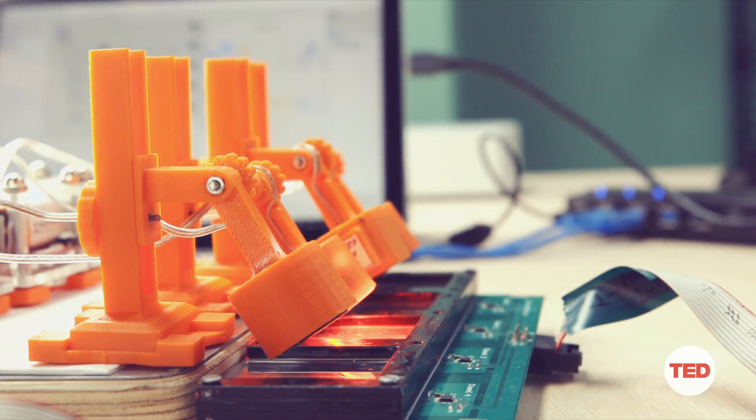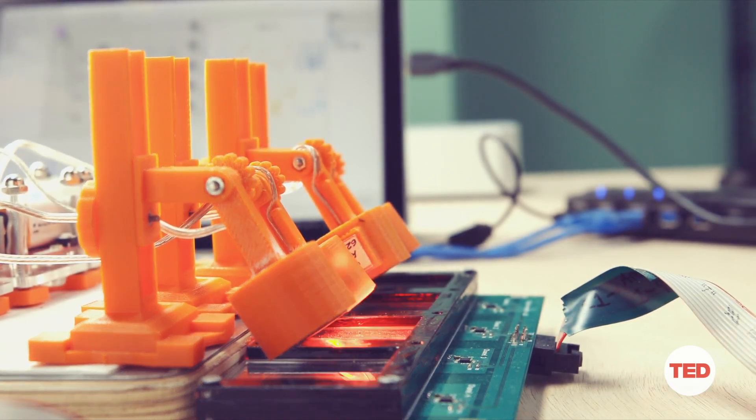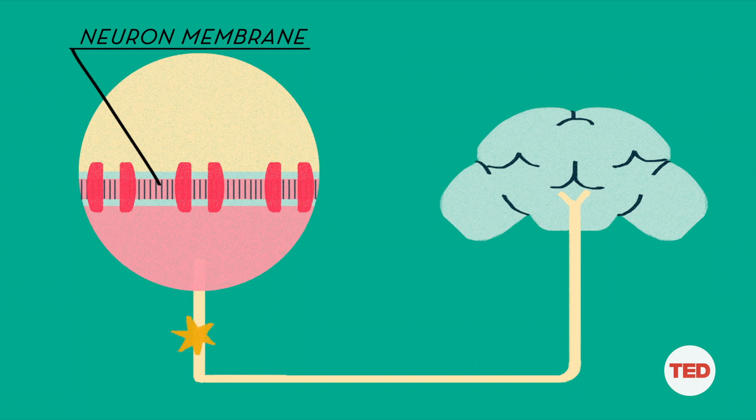And when the channels see that red light, they're going to open up. They're going to cause that neuron to fire. And the sweet taste message will be sent to the brain.